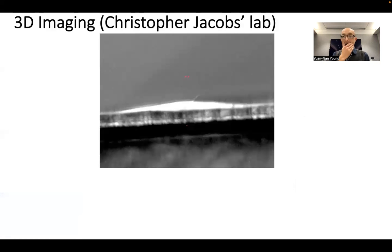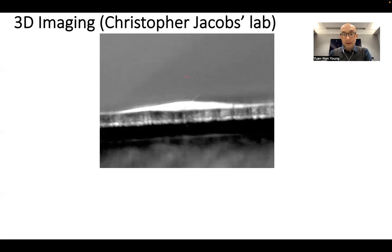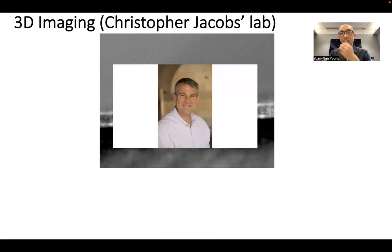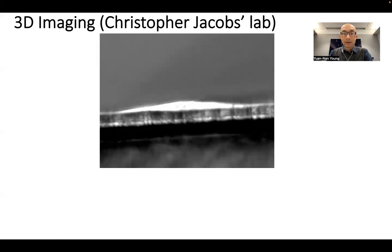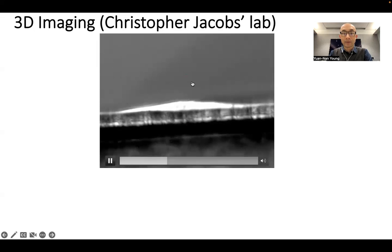It all started when I visited Christopher Jacob's lab at Columbia. Chris was a biomechanicist whose expertise was the primary cilium. Unfortunately, he passed away a few years ago. When I visited his lab, he showed me that he can actually visualize the bending of the primary cilium, which is this filamentary structure here, by using a microfluid flow chamber.